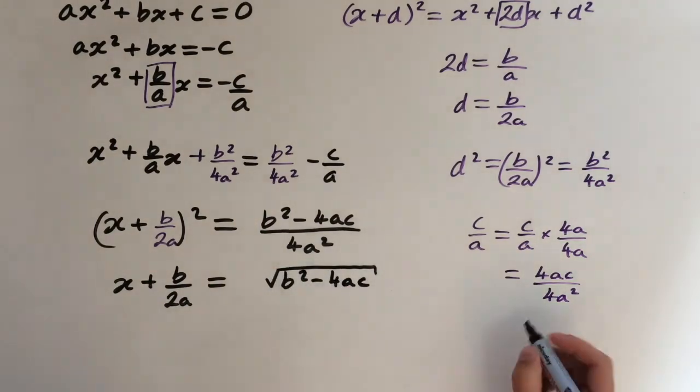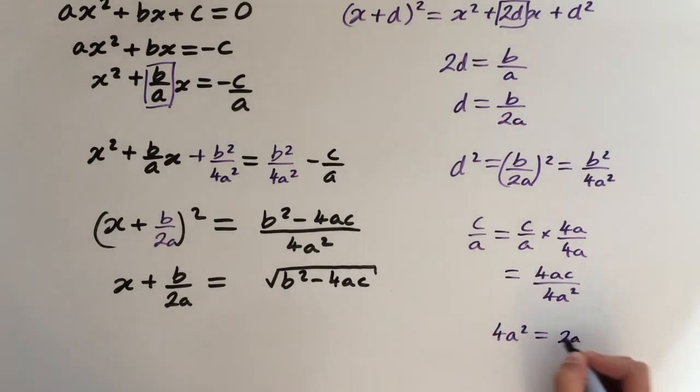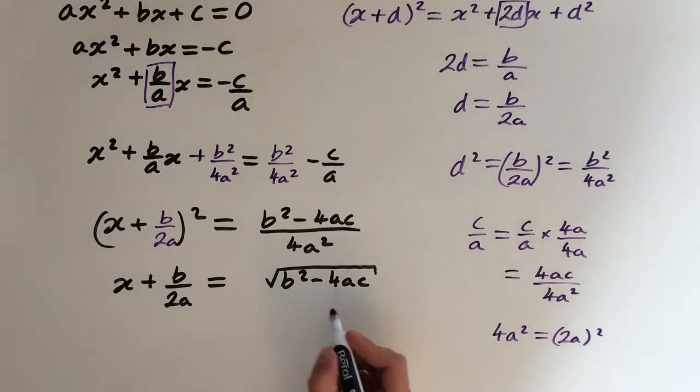But at the bottom, 4a², we can write that as 2a squared. So when we square root this, we're just going to get 2a. So this is over 2a.